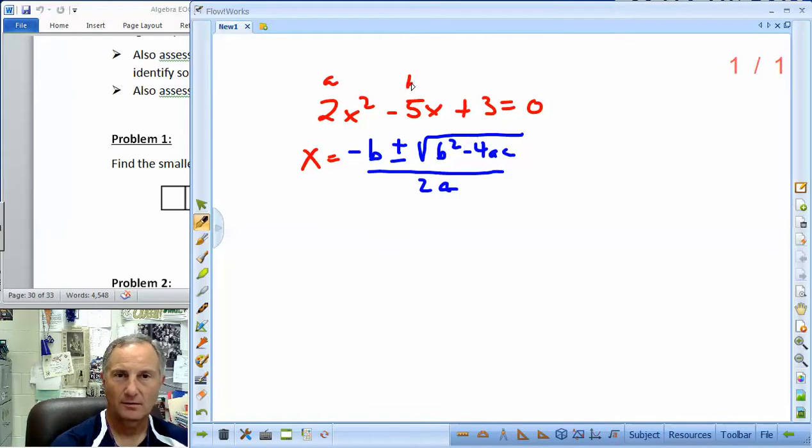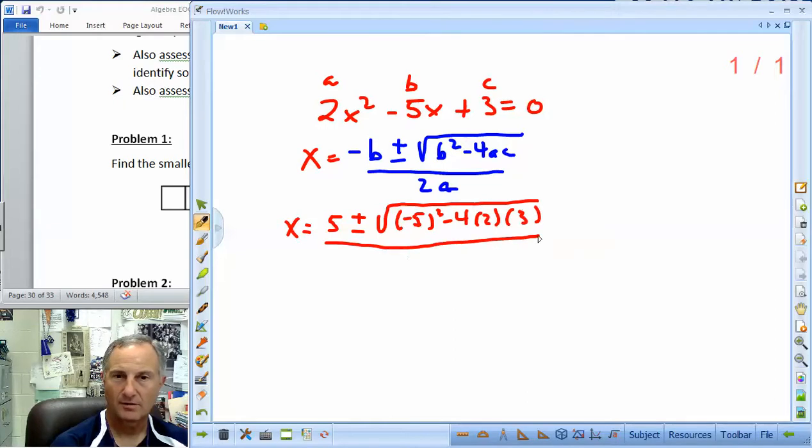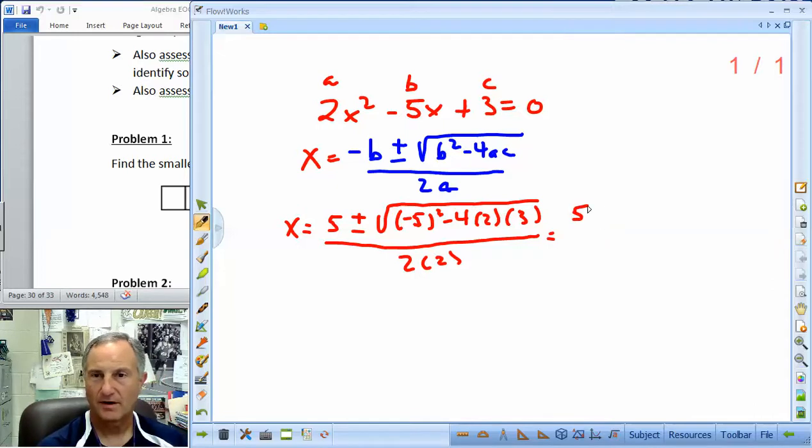I know a lot of you guys struggle with that, so I'm just going to use the quadratic formula. Remember, it's negative b plus or minus the square root of b squared minus 4ac all over 2a. This will give you a chance to see this. So again, a, b, c. So x is going to equal negative of b. Well, b is negative 5, so the negative of that makes it a positive 5.